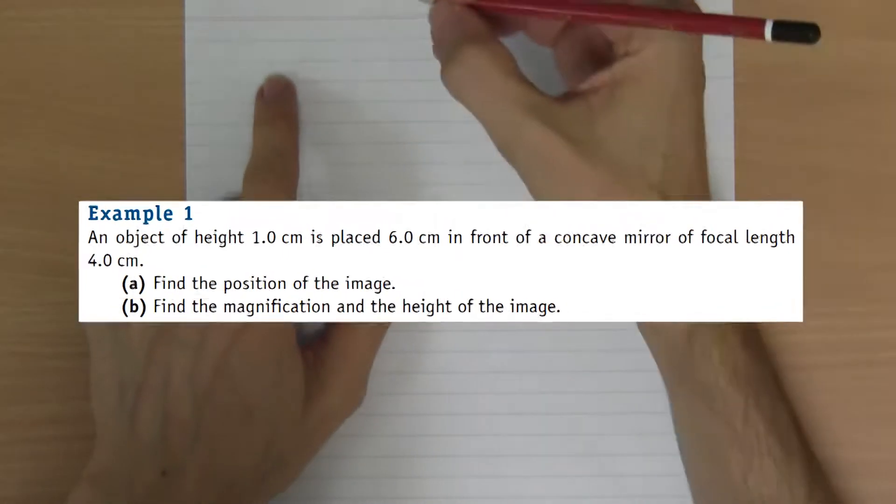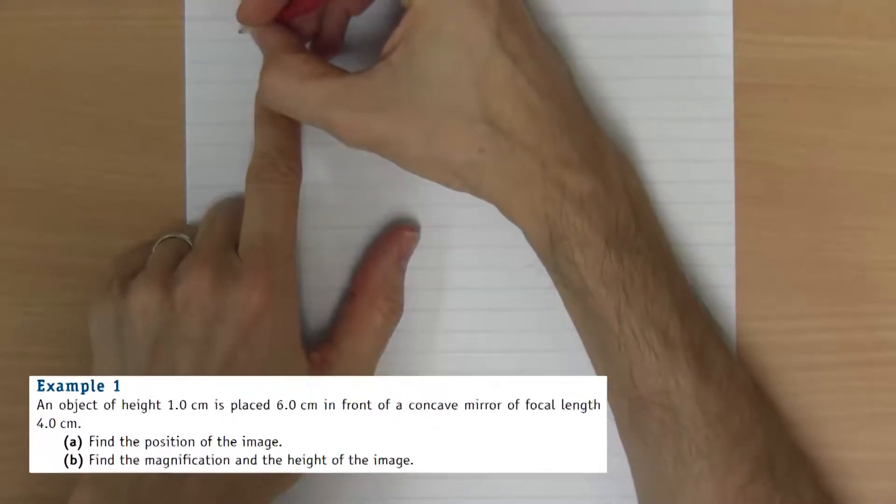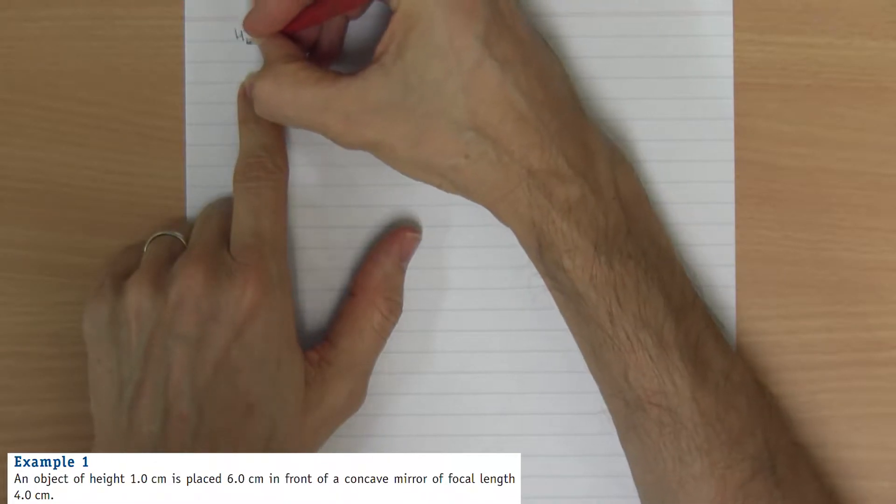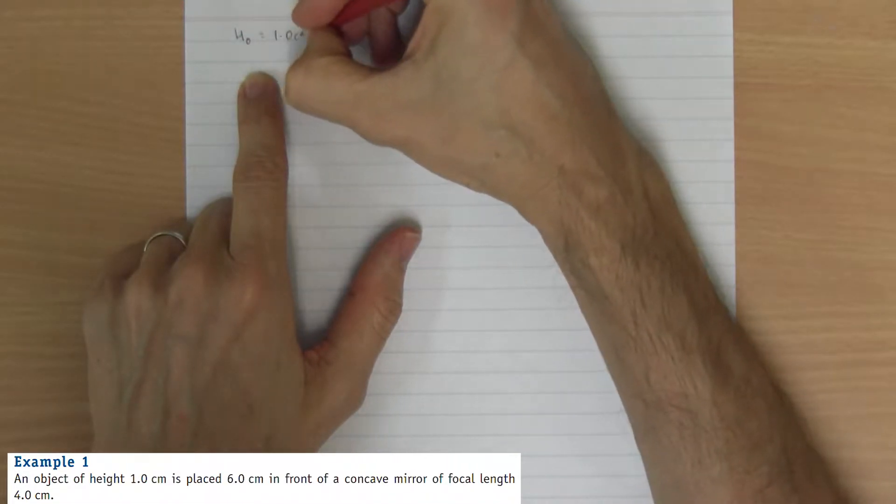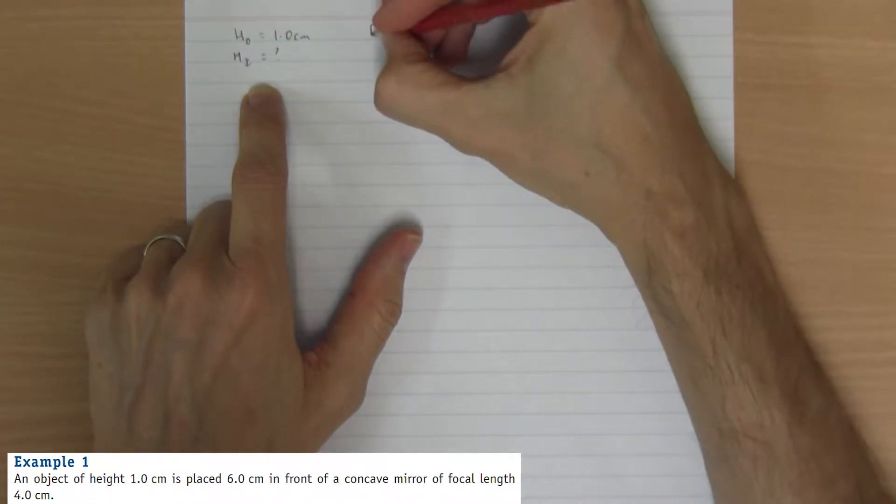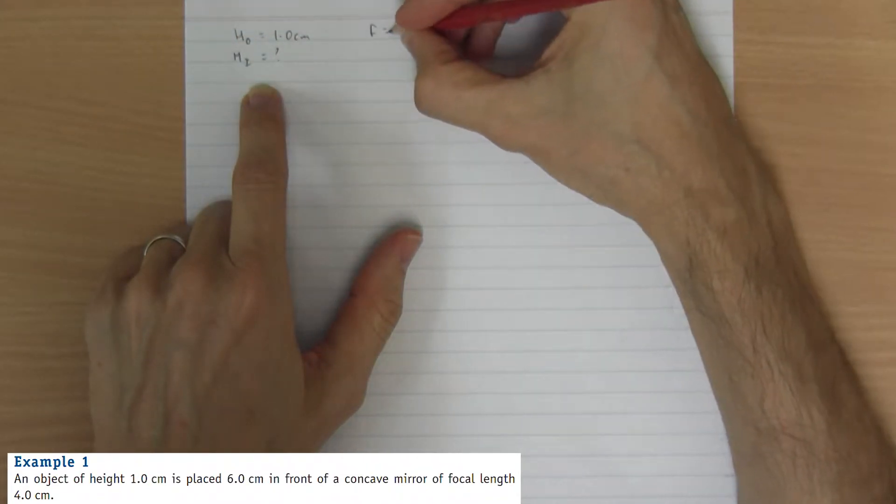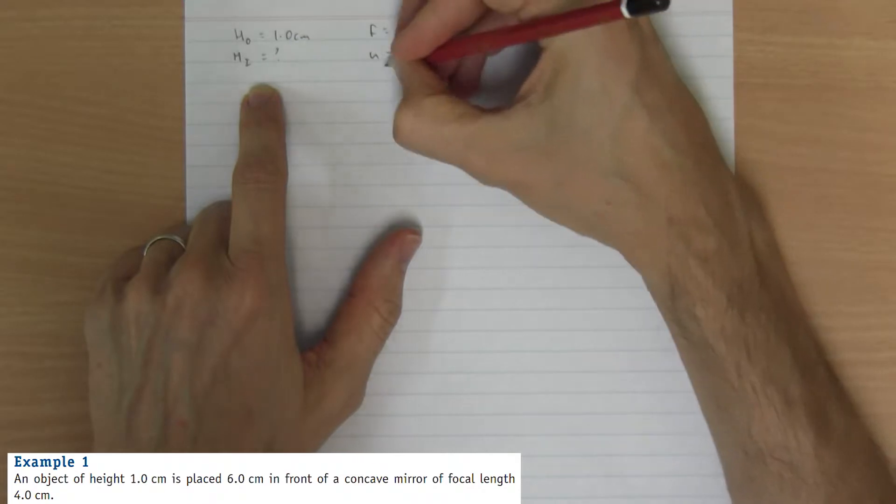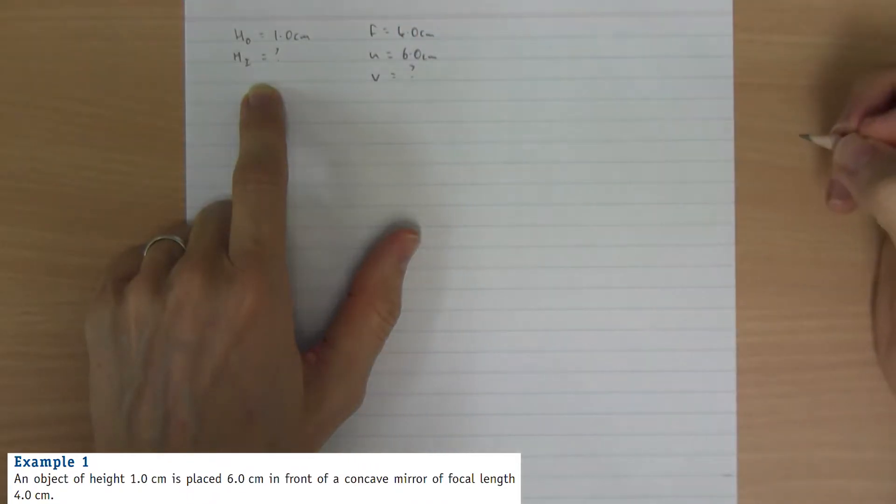So, let's write down what we know. The height of the object is one centimeter. Height of the image, I don't know. Focal length is four centimeters. U, object distance, is six centimeters. V, I don't know.